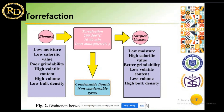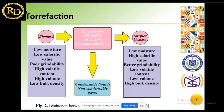Now we consider the torrification process. Why do we need the torrification process? What are the main disadvantages of raw biomass? Raw biomass has high moisture content, low calorific value, poor grindability, and low bulk density. To improve these properties — specifically calorific value, grindability, and volatile content — we need the torrification process.